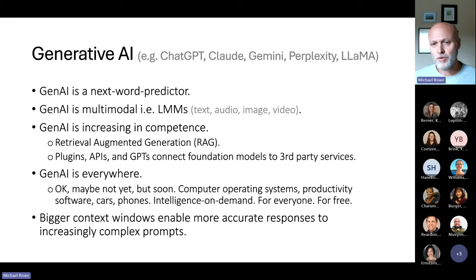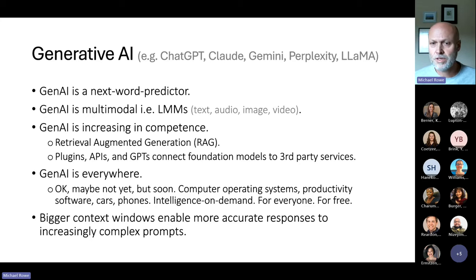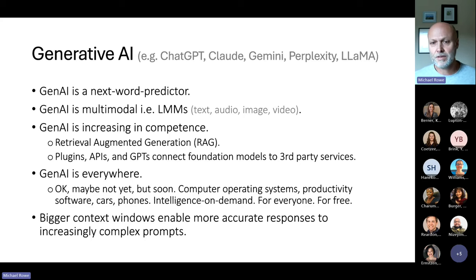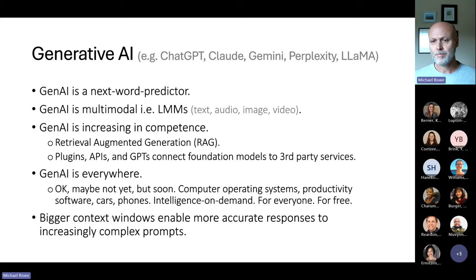People who run small experiments with what I think of as vanilla language models, using very basic out-of-the-box naive prompts, tend to get very simple responses back. They look at those responses and say, 'Oh, there's nothing to see here, this is not really that interesting.' I'm going to go into a little bit of detail about why that is not true.